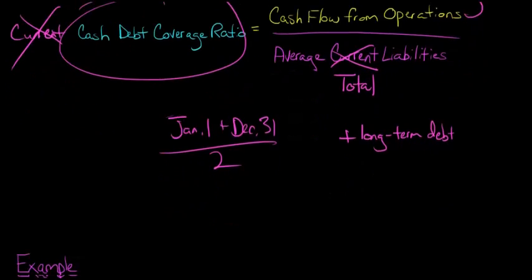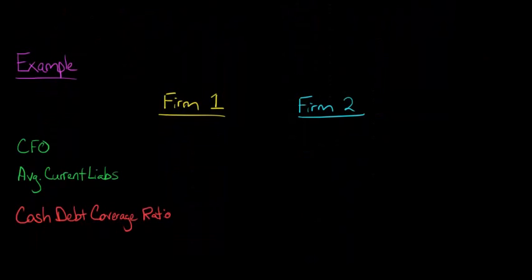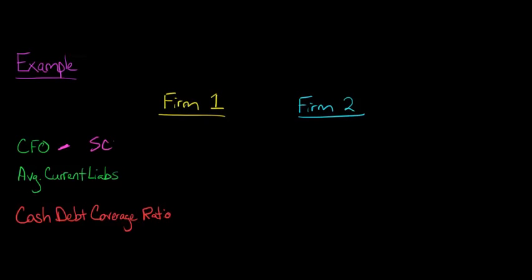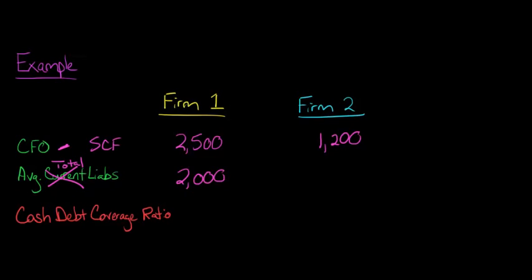If we look at the cash debt coverage ratio in practice and take a look at some numbers for actual firms, we'll start with the cash flow from operations, which comes from the statement of cash flows. For firm 1, that's $2,500, and for firm 2, that's $1,200. The average total liabilities for firm 1 is $2,000, and for firm 2 that's $1,500.